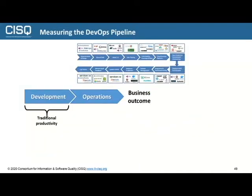Let's think about how we measure the pipeline. There's the development activity, the operations activity, and there's a business outcome. Traditionally, we've talked about productivity in software as being some measure of how much product I produced divided by the number of hours it took me to produce it — person days or person years, whatever the denominator is. That was our traditional measure of how productive we are.